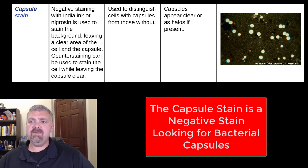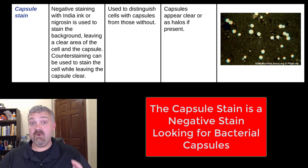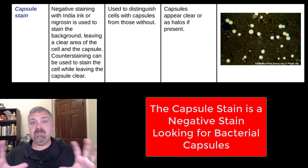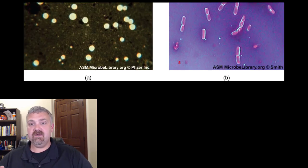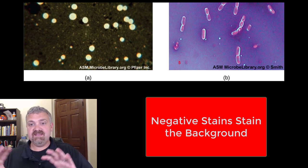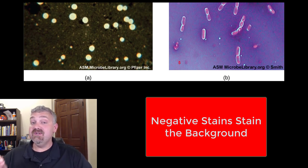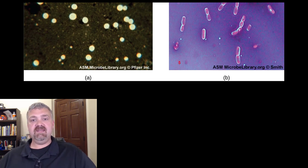Lastly, we have the capsule stain. The key here is that capsules can't be stained, so a capsule stain is an example of a negative stain — you stain the background and everything else, but not what you're trying to identify, which is the capsule. Looking at the image on the right, notice the white, clear areas around those microorganisms — those are the capsules. You stain the organism inside the capsule and the environment outside it, but you can't stain the capsule itself. That's why it's called a negative stain: you stain the background, and what you see is what isn't stained.